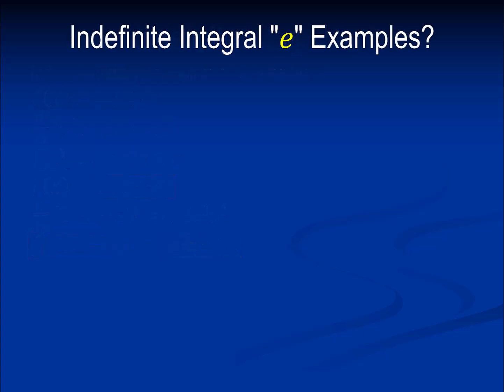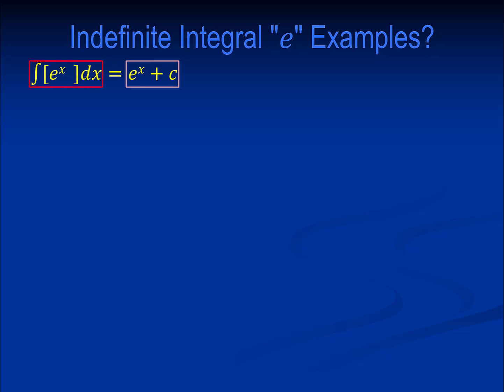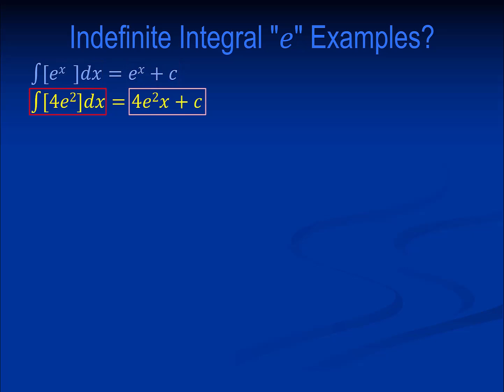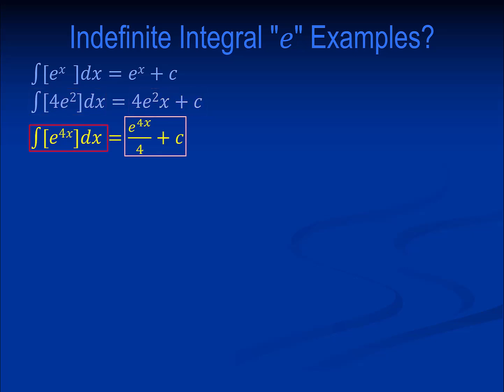What are some indefinite integral Euler e examples? The indefinite integral of e to the x is e to the x plus c. The indefinite integral of 4 e squared equals 4 e squared x plus c. The indefinite integral of e to the fourth x equals e to the fourth x divided by 4, plus c.